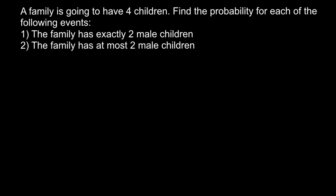Hello and welcome to Nikolai's genetics lessons. Today's problem is: a family is going to have four children — find the probability for each of the following events. The first variant is the family has exactly two male children. Today I'm going to show you a shortcut for how to solve such problems where we have up to five children, for when you're on an exam and there isn't much time to list all the combinations.